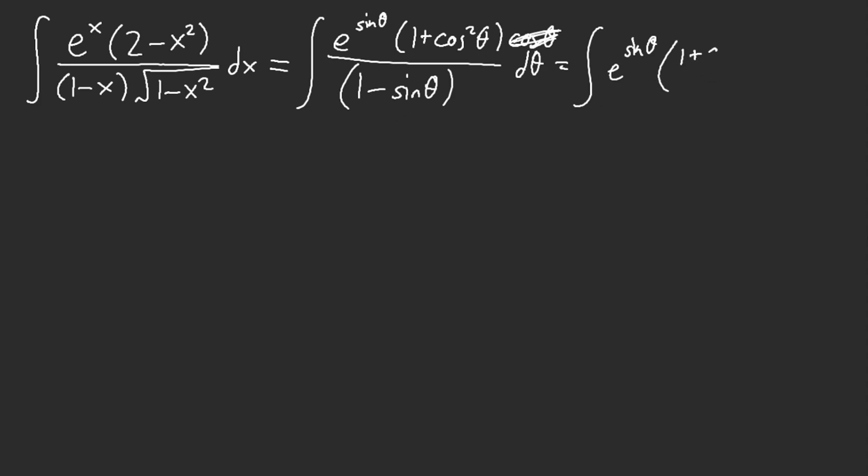And I got 1 plus cosine squared over cosine squared now, because I conjugated. So now I got this. Now it's just e to the sine theta, and I was slowly freaking out. I was freaking out just a little bit, because I'm just like, okay, what do I do?